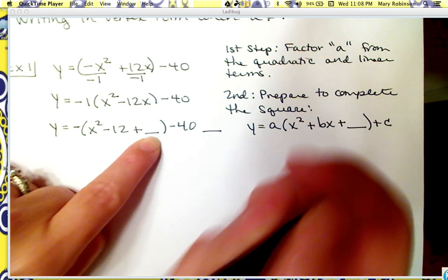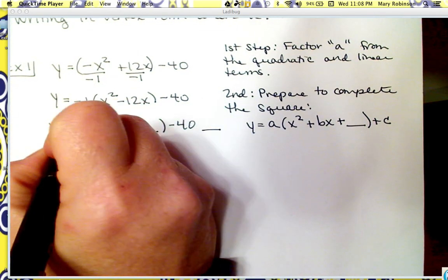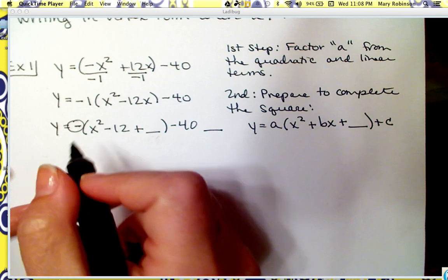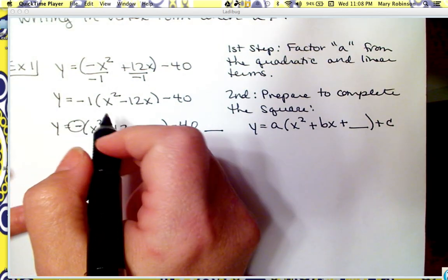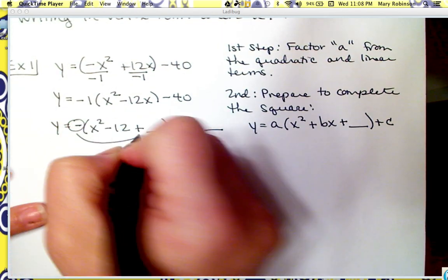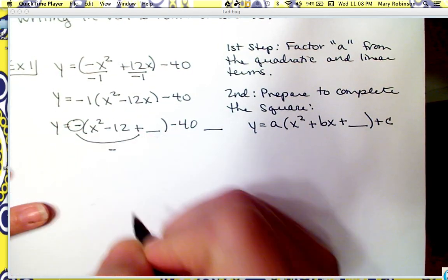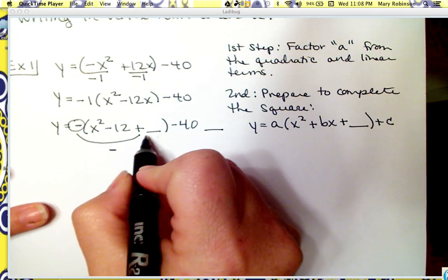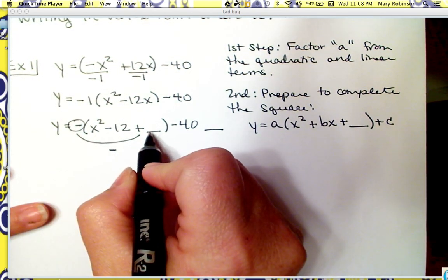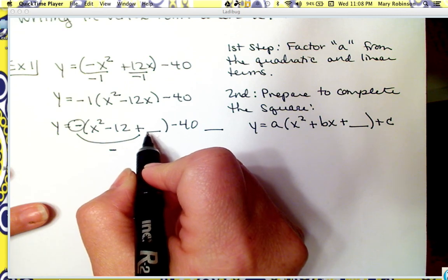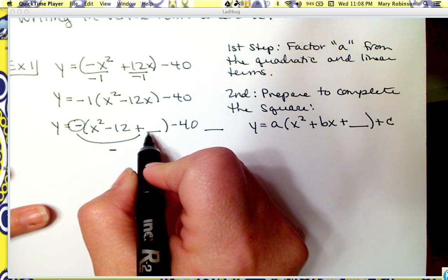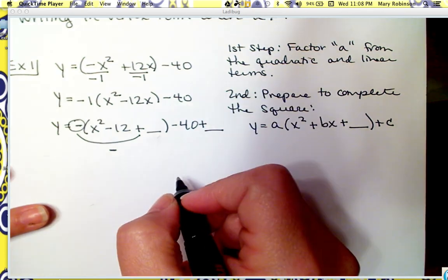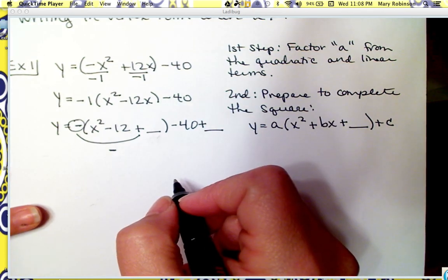If we distribute this a value on the outside and it is negative, then what we would really be introducing to this problem is a negative number. So because this number we introduce is negative, to counterbalance that and maintain equivalency, we are actually going to add the number at the end. It'll make sense in just a moment.